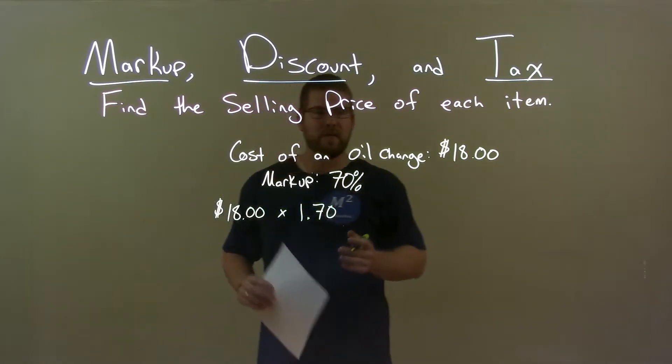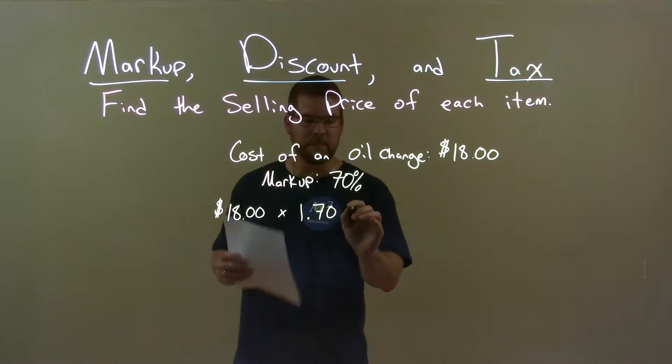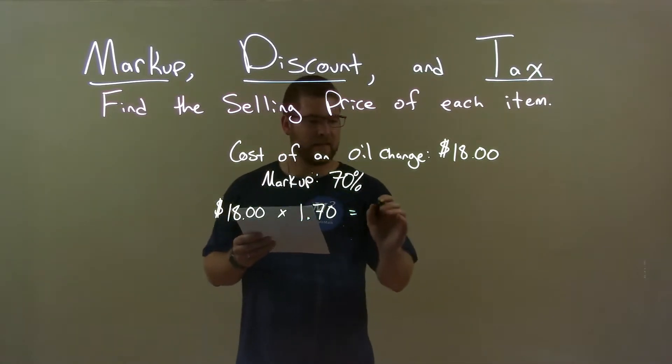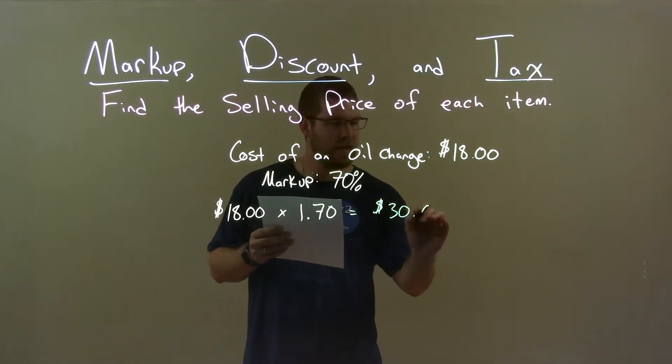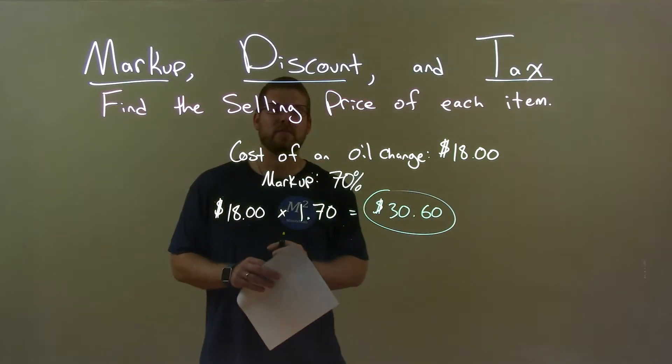0.70 represents 70%, and then the 1 represents the initial item because we're going up here. We multiply that out, and that gets me $30.60. So our final answer here is $30.60.